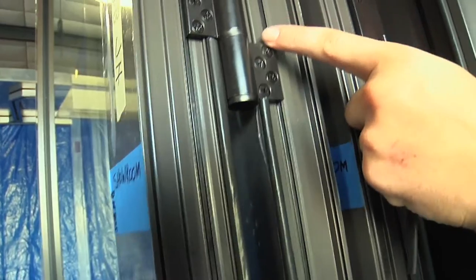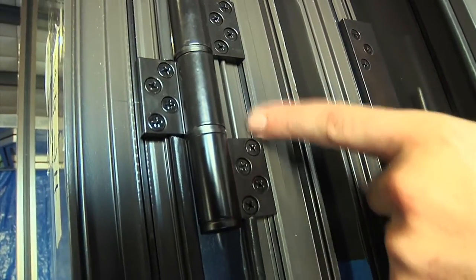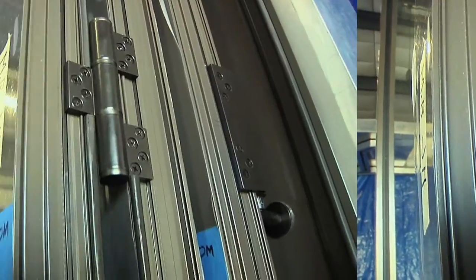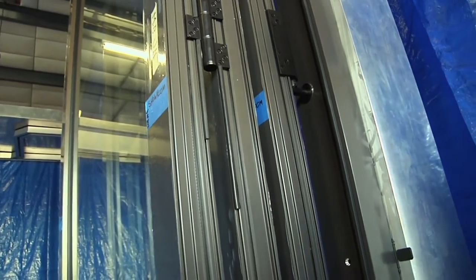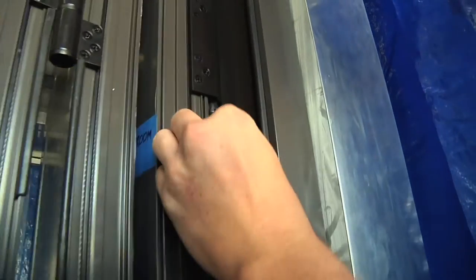You never put weather stripping in between the two hinge leaves. The large P weather stripping also goes on the panel that's connected to the pivot.